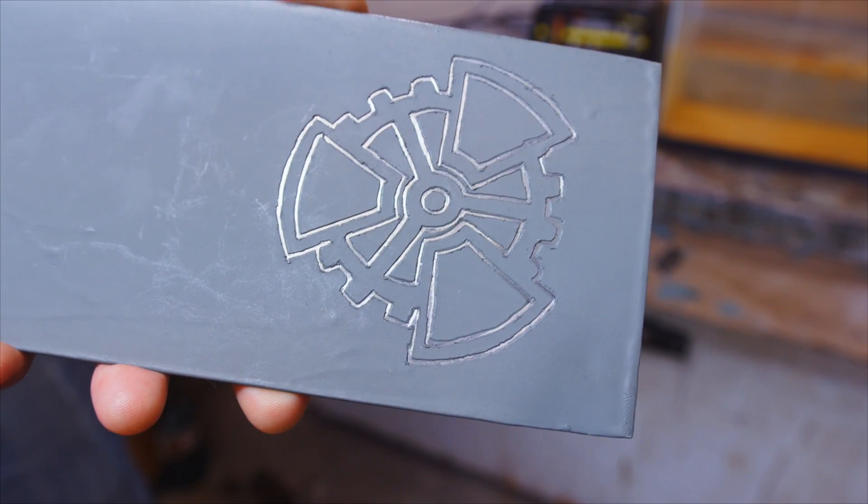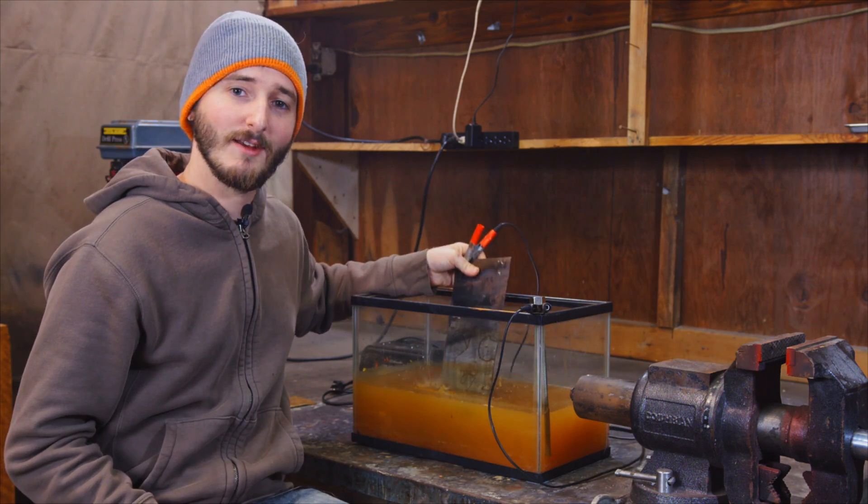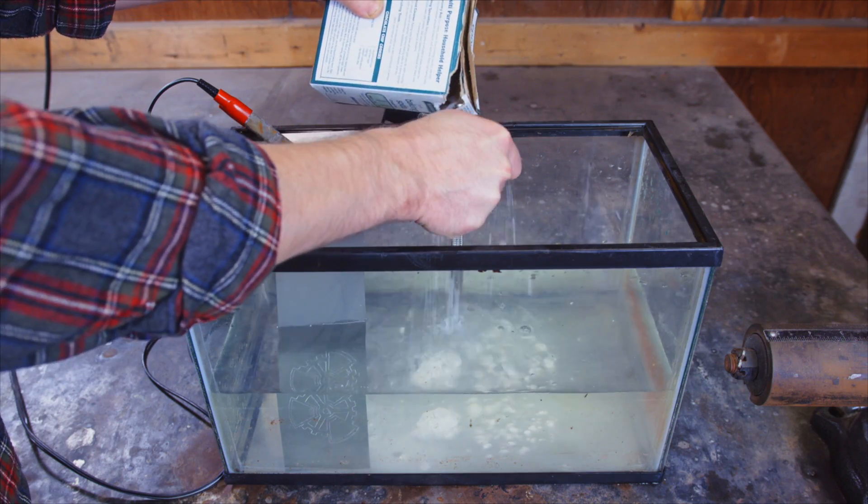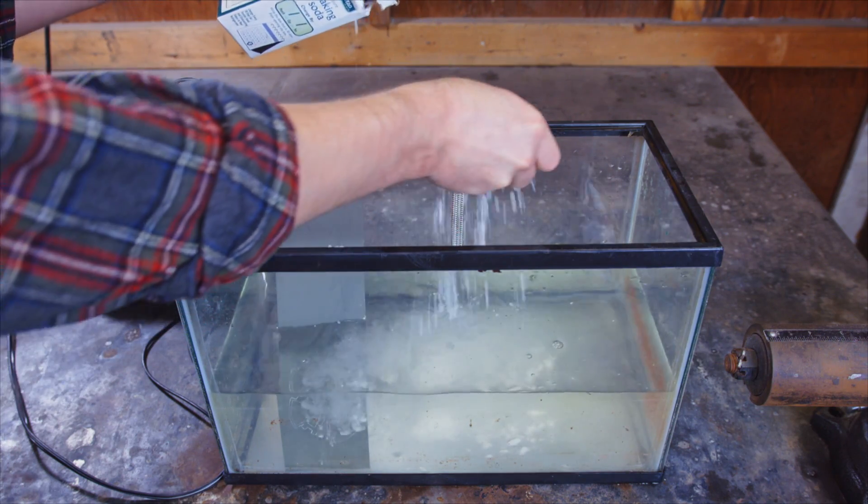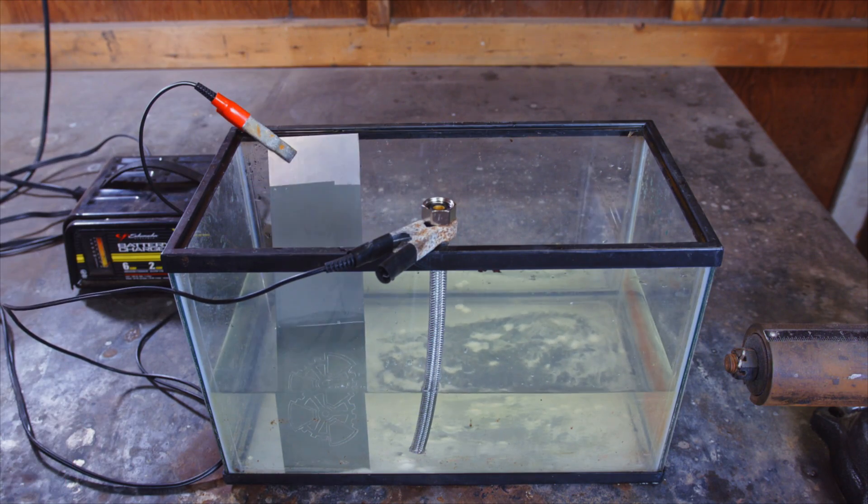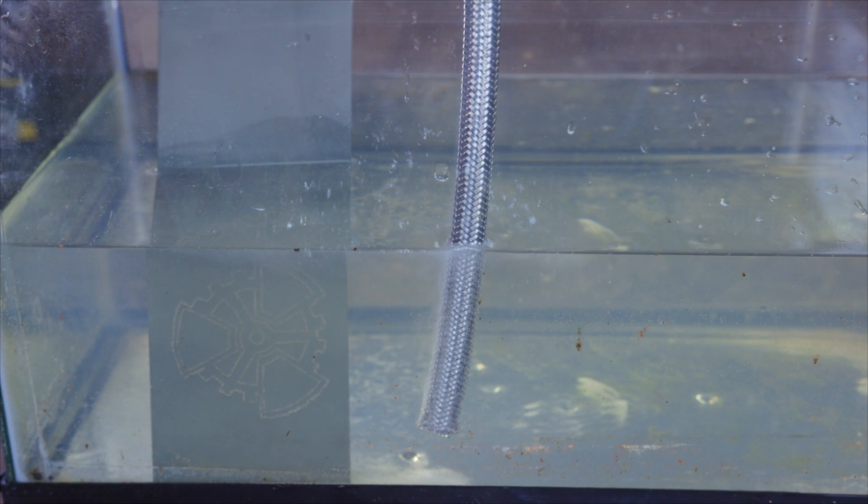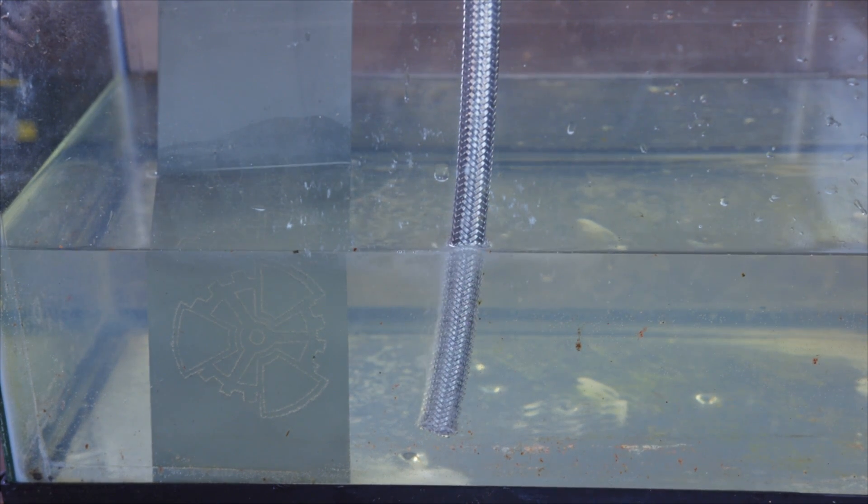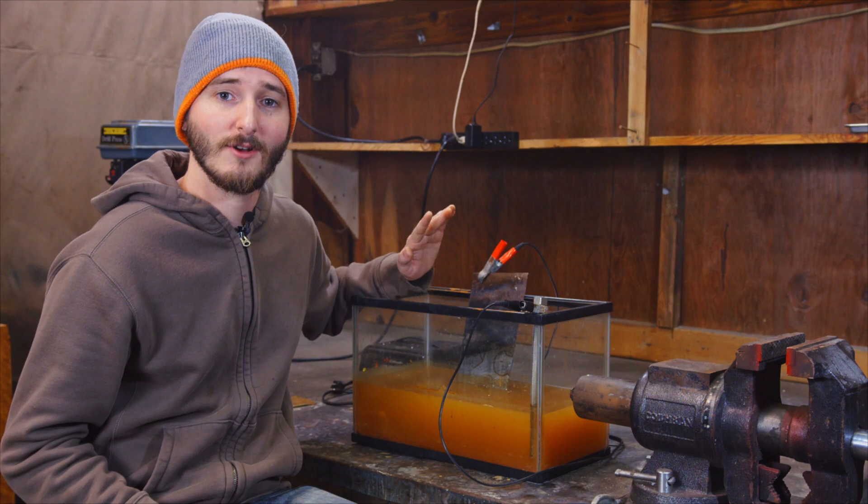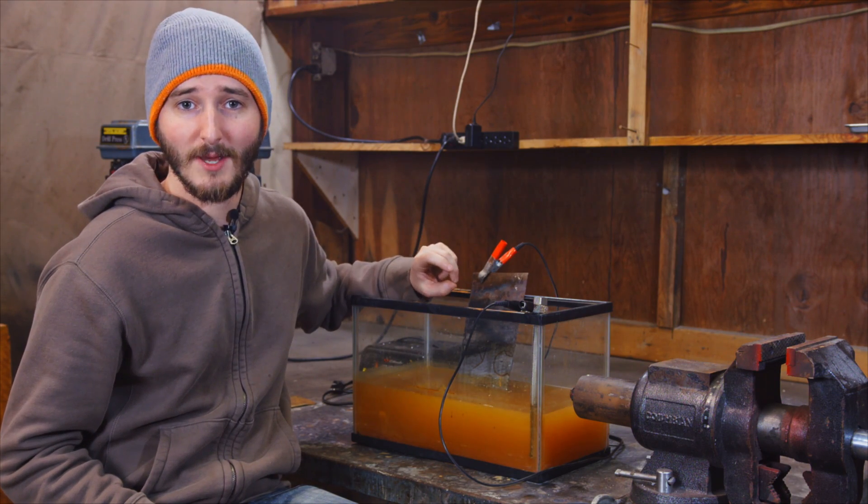By taking the plate of steel and submerging it into a tank filled with water with a dissolved electrolyte inside, such as table salt or baking soda, and then passing a current through this water from the steel plate acting as an anode, it should corrode away the freshly exposed steel while leaving all the steel intact that is still covered by the non-conductive paint.